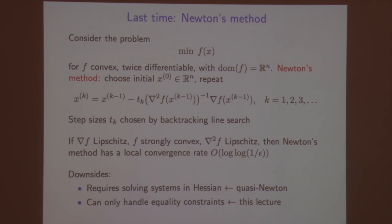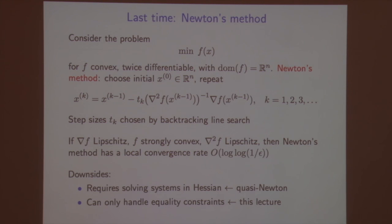What are the downsides of Newton's method? There are two. First, it requires solving linear systems in the Hessian. If the Hessian is dense in n dimensions, that takes O(n³) operations — very prohibitive for large-scale problems. Second, we can only handle equality constraints with Newton's method. A fix for the first issue is quasi-Newton methods. The second issue — inability to handle inequality constraints — is what we remedy today with the barrier method.